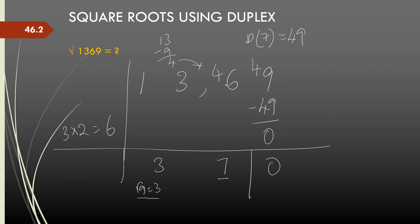Now, 46 in the next step, I divide by 6, I get 7s 42, 4 carry forward to the next stage. So this becomes 49 and here I will use the duplex of the previous digit in the answer. Just the previous digit in the answer, I will use the duplex to adjust. So 49 minus 49 becomes 0 and hence the process stopped there. So 37 is the square root.